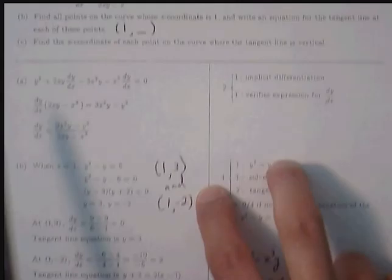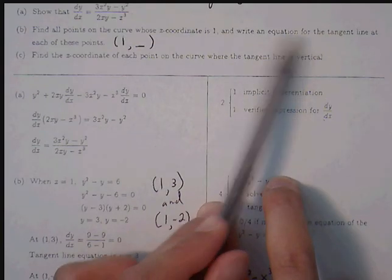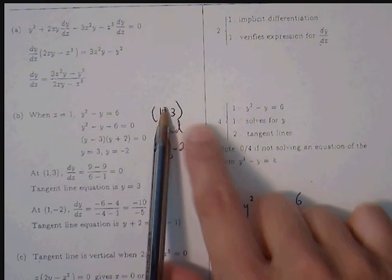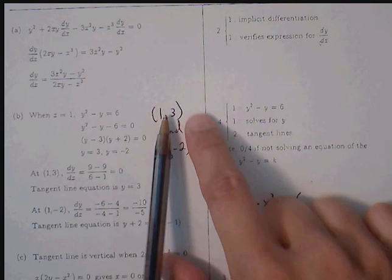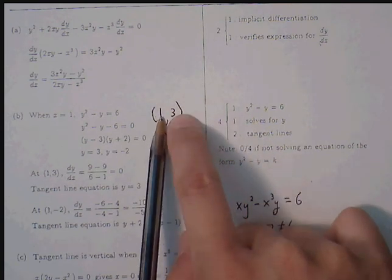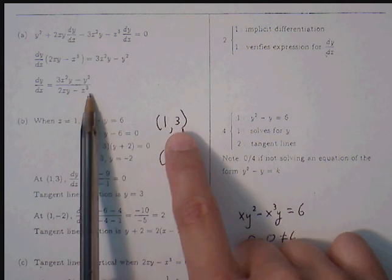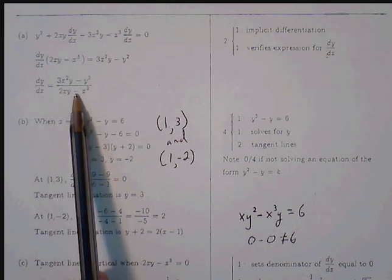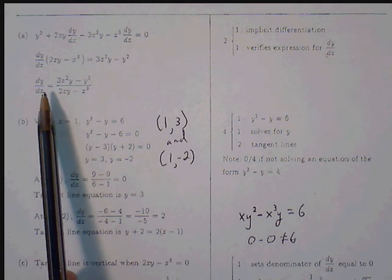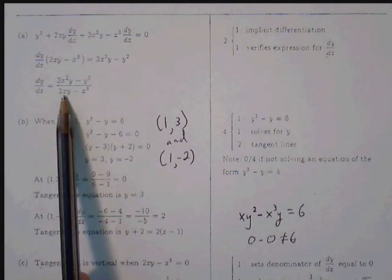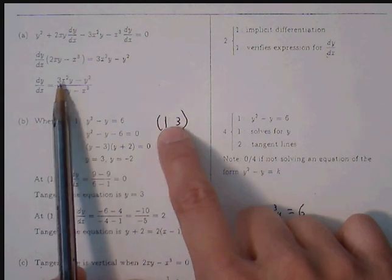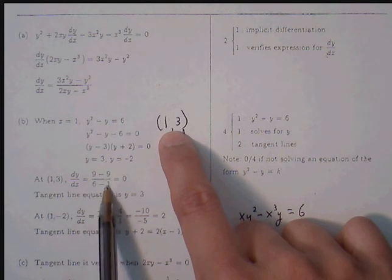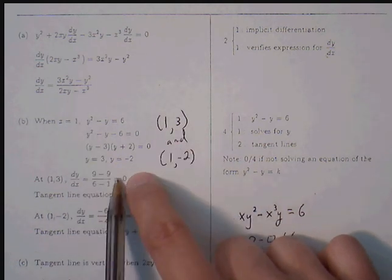Next, write the equation for the tangent line at each point. To find the tangent line we need the ordered pair and the slope. The derivative equation is our slope formula — plugging in any ordered pair returns the slope of the tangent at that point. Plugging (1, 3) into the derivative: we get 3·3 minus 9, which is 0, all over 6 minus 1, which is also 0... wait — the numerator is 9 minus 9 equals 0, so the slope is 0.